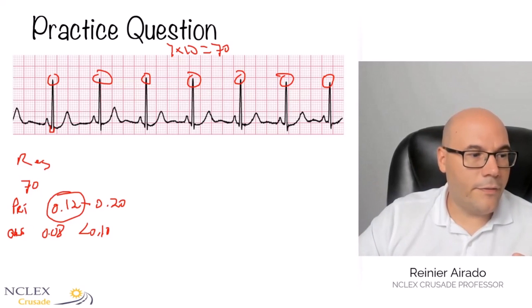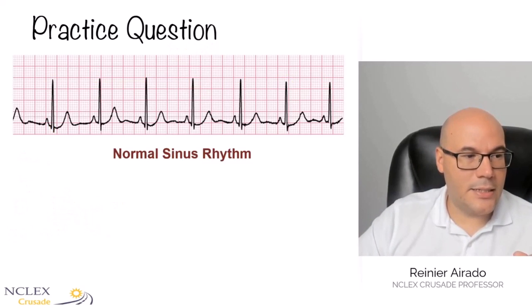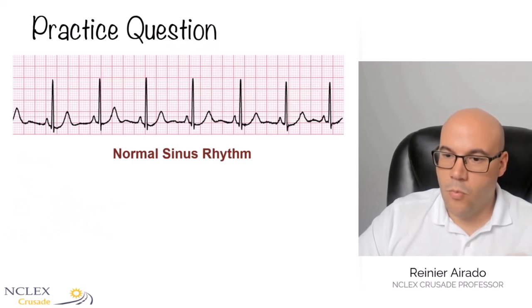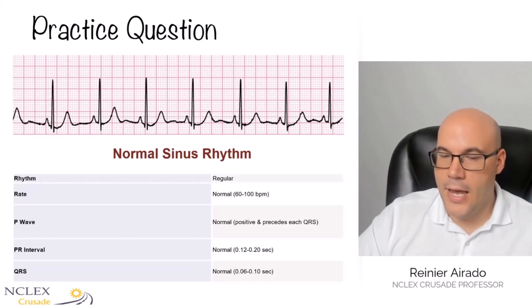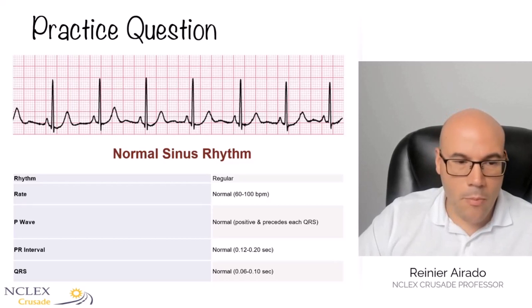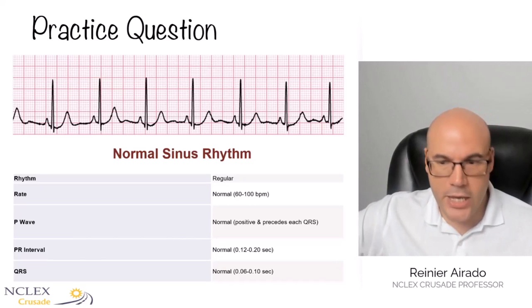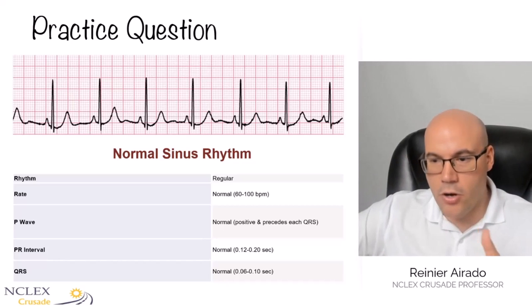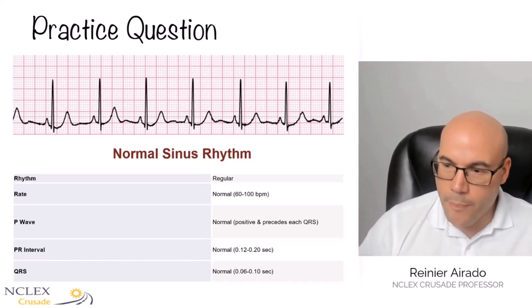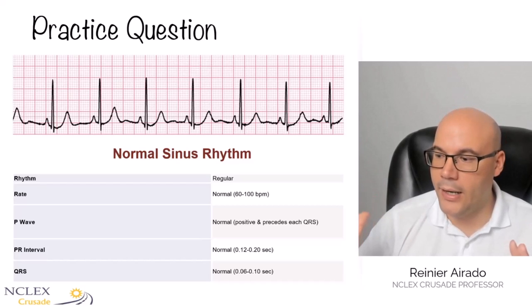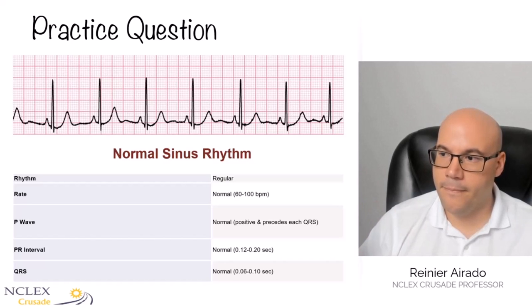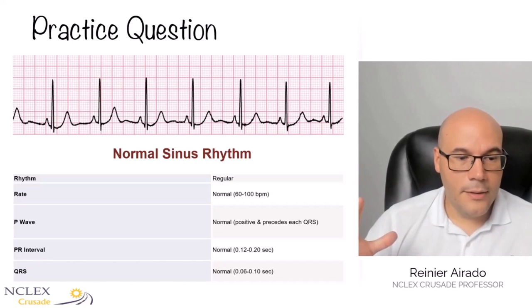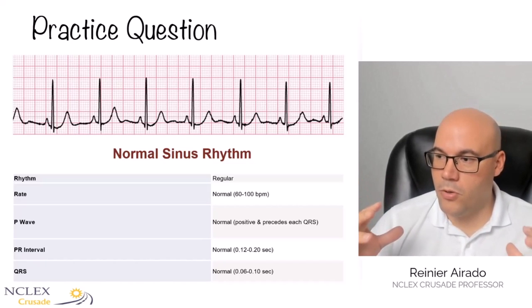So we have a normal sinus rhythm. What defines a normal sinus rhythm? A regular rhythm, a normal heart rate between 60 and 100, a normal upright P wave that precedes a QRS complex, a normal PR interval between 0.12 and 0.20, and a normal QRS between 0.06 and 0.10. If you have all of that, then you have normal sinus rhythm.